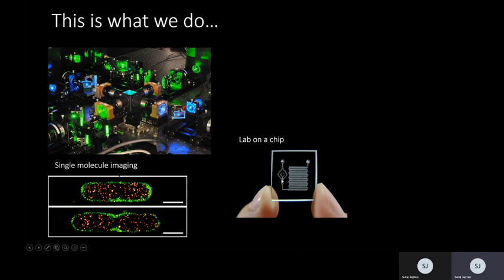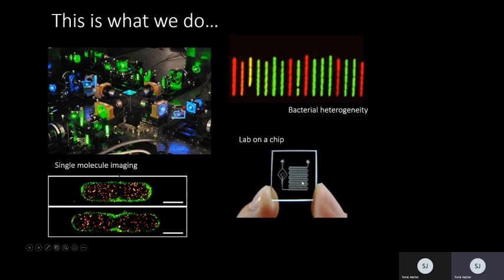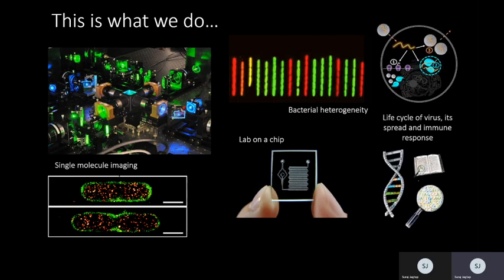We try to carry out those reactions at this small scale. We also work on bacterial heterogeneity. Within certain populations of bacteria, you will have some bacteria that are behaving differently compared to the general population. We also work on viruses. We study the life cycle of the virus, its spread, and the host immune response to the viruses.